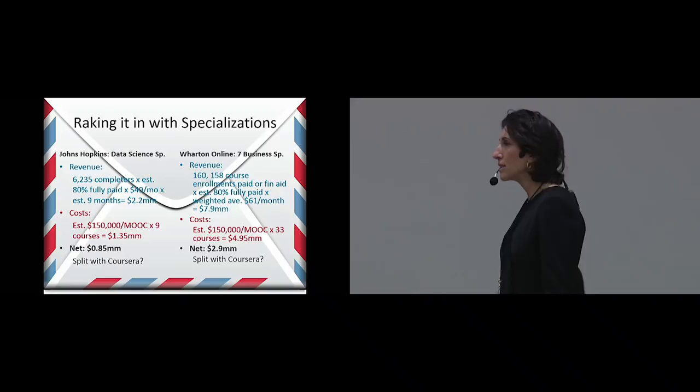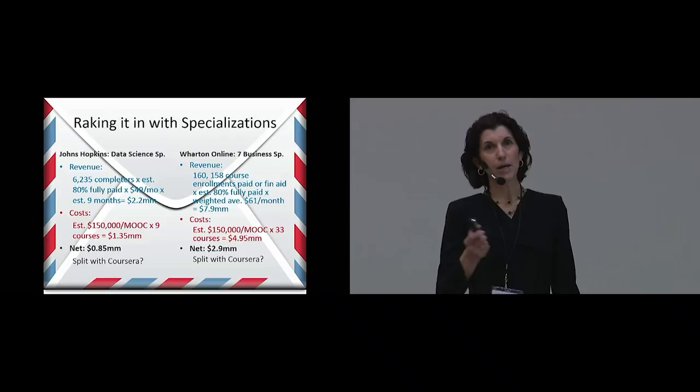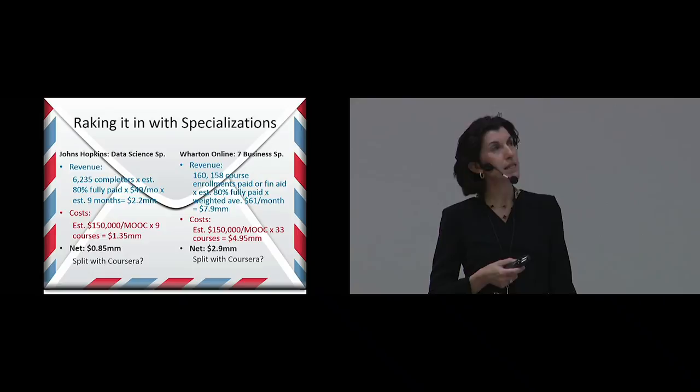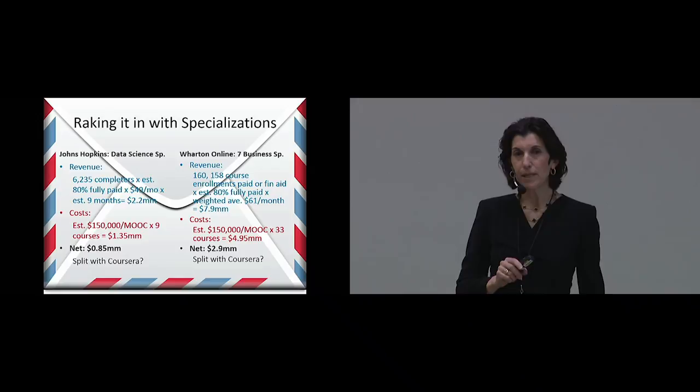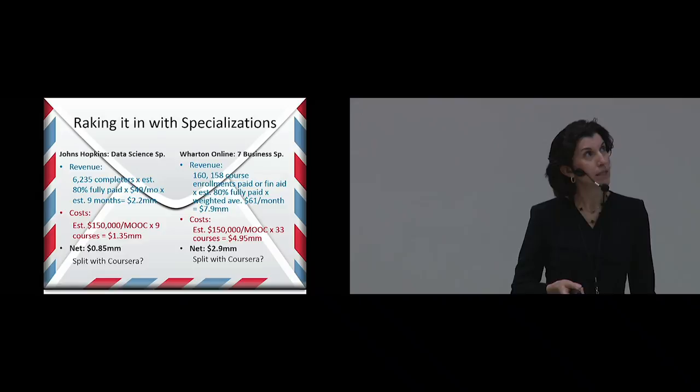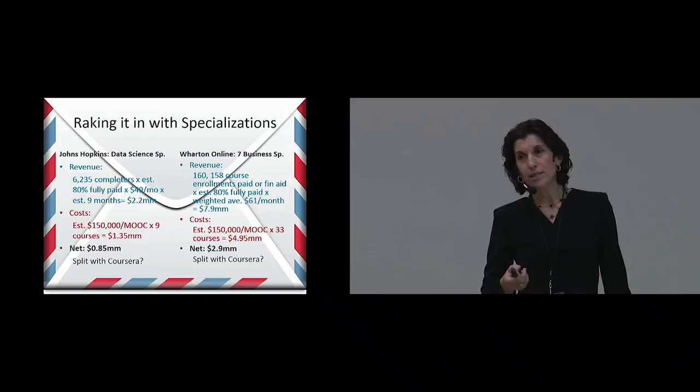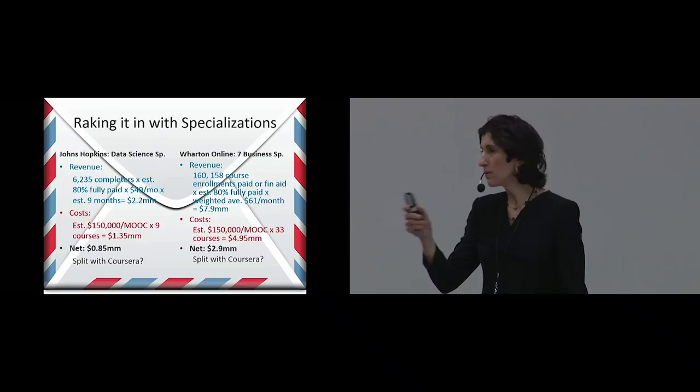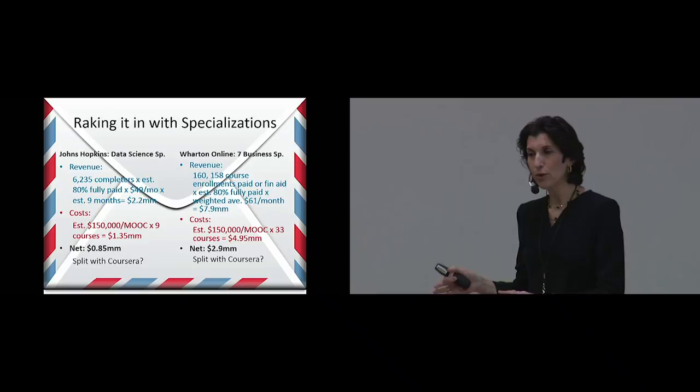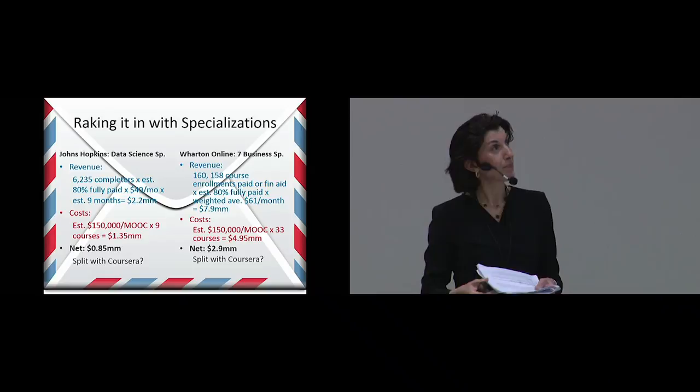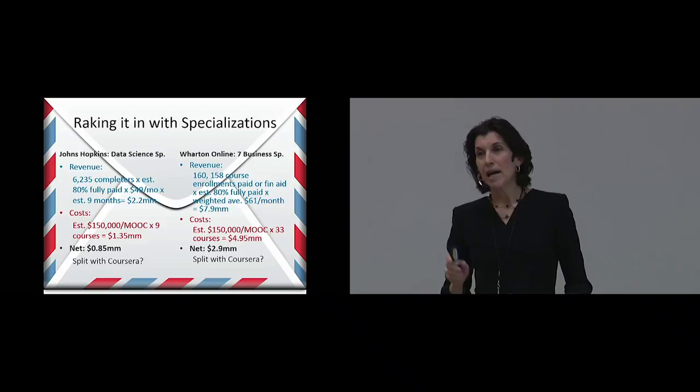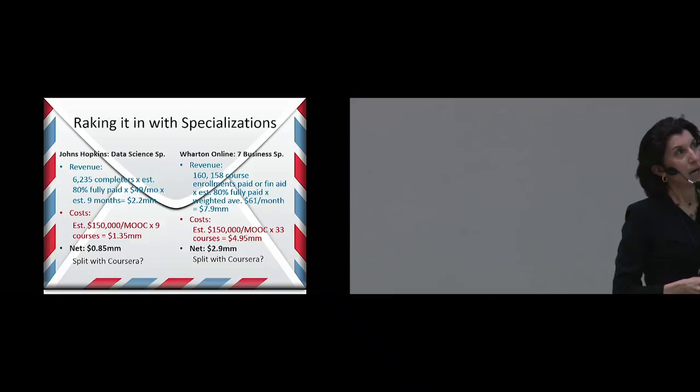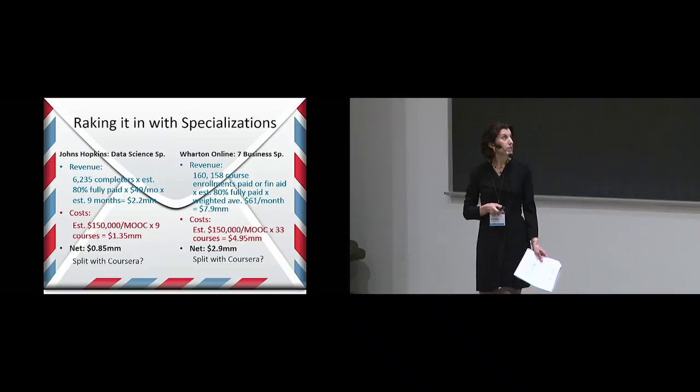So, this is looking at potential revenues and costs with a couple of the more popular specializations. On the left-hand side, we have Johns Hopkins data science specialization. Anyone here from Johns Hopkins today? You might have better numbers than this. Okay, so they've been running this specialization since about April of 2014. As of August last year, they had over 6,000 completers of the entire specialization. I'm estimating that about 80%, 80% of the people paid in full, with the other 20% being on financial aid. We know they were paying $49 a month for approximately nine months. That brings us to 2.2 million. And remember that these are just for the courses taken by people who completed the specialization. So, Deval, where did you go? Deval was here. You have different numbers in your article because you included all the courses, not necessarily those that constituted the entire specialization. But that brings it to a much higher number. And then on the cost side, I'm just hazarding a guess based on my own analysis of other people's MOOCs of $150,000 for nine MOOCs, a cost of $1.35 million, with net revenues almost a million. I don't know what the split is with Coursera, but I'm guessing that both of them are quite happy.